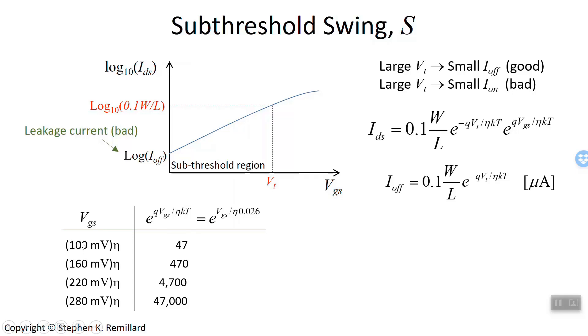What I find is that when the gate source voltage is 100 times eta, the exponential is 47. When it's 160 times eta, it's 470. When it's 220 times eta, 4,700, you see a pattern. Add 60 millivolts to this term in these parentheses, and the exponential goes up a factor of 10. Consequently, the drain source current goes up a factor of 10. So what I say is that this exponential and consequently the drain source voltage goes up a factor of 10 for every 60 millivolts times eta change in the gate source voltage.